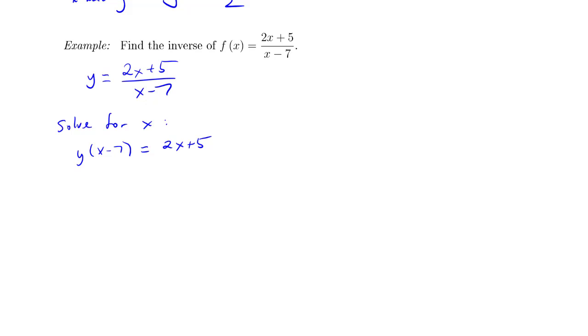So I get y times x minus 7 equals 2x plus 5. And when I multiply that side by x minus 7, the x minus 7's cancel. Another way you can think about it is cross-multiplying. So then multiply this out. xy minus 7y is 2x plus 5.